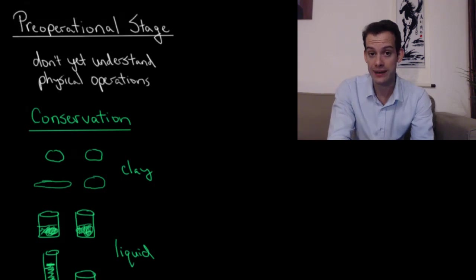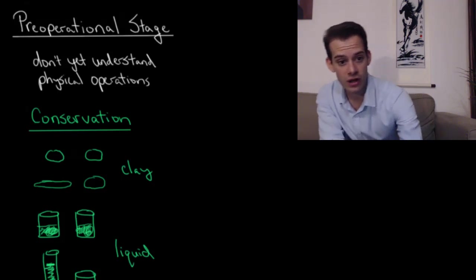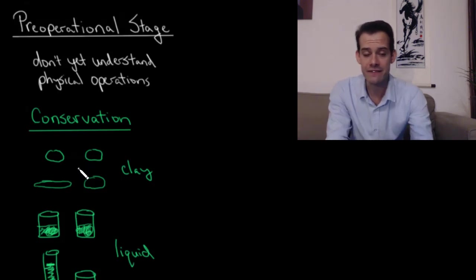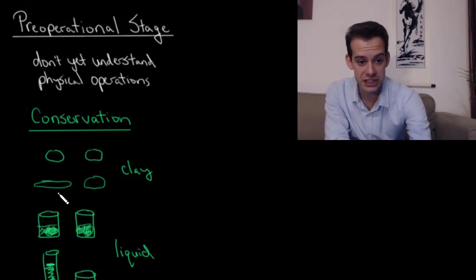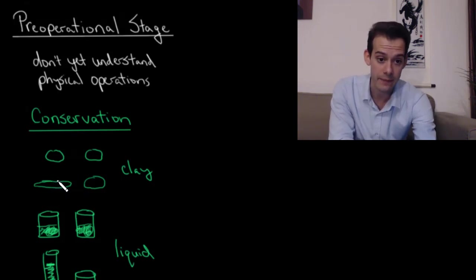One way we can see this is in the concept of conservation. Piaget found that if he took two lumps of clay that were the same size and asked children about these lumps, they said these are the same. Then he flattened one of them out into a different shape, and now the children would believe that this piece of clay had more clay, that it was bigger.